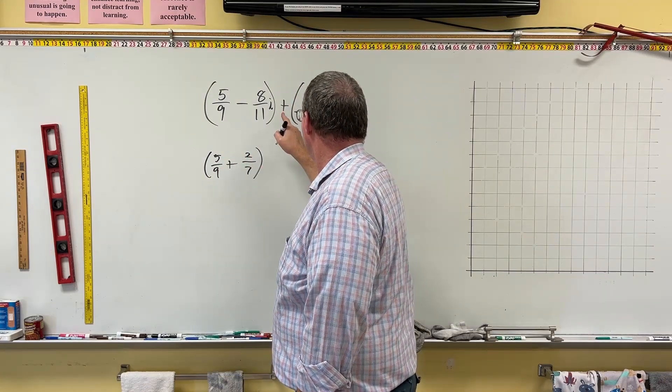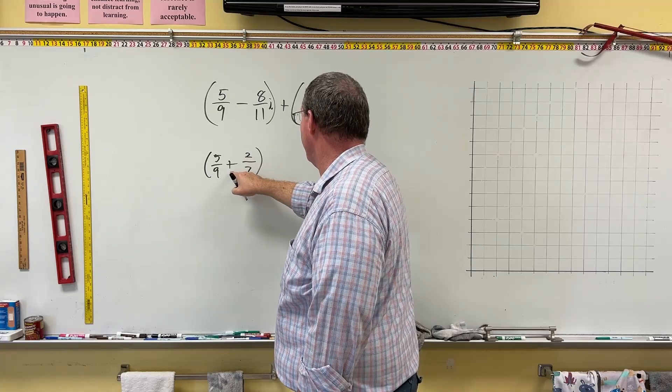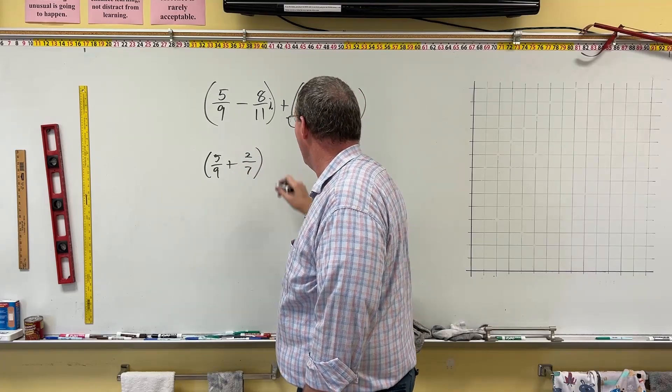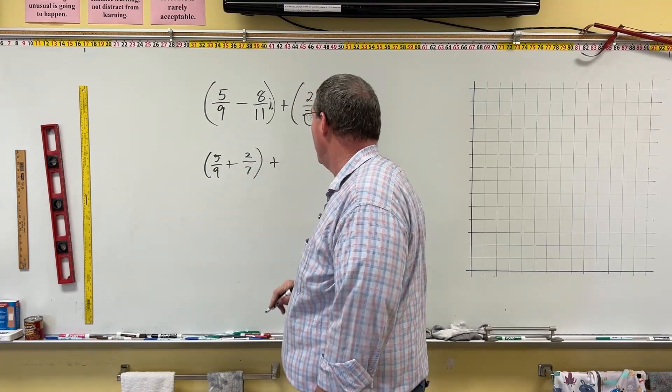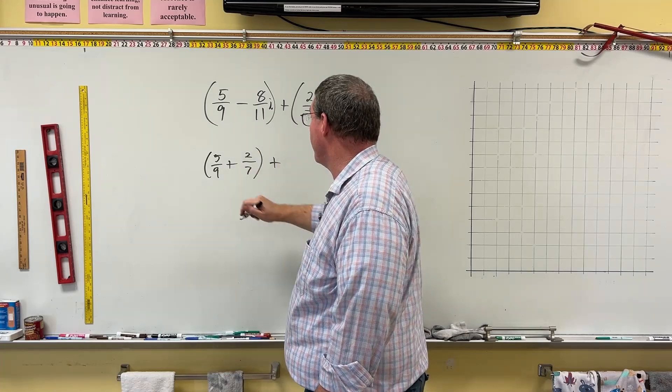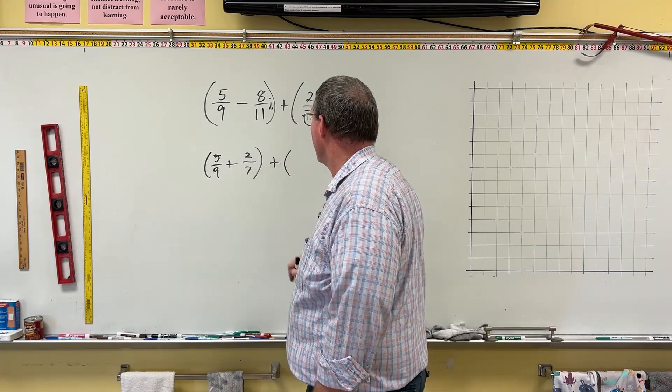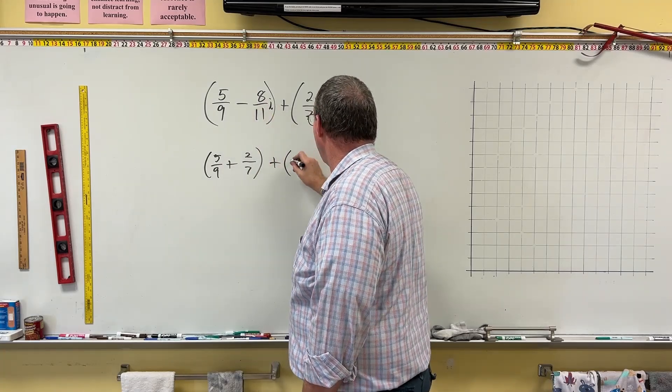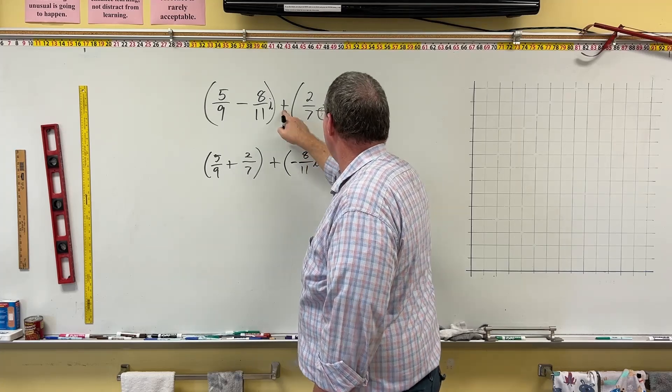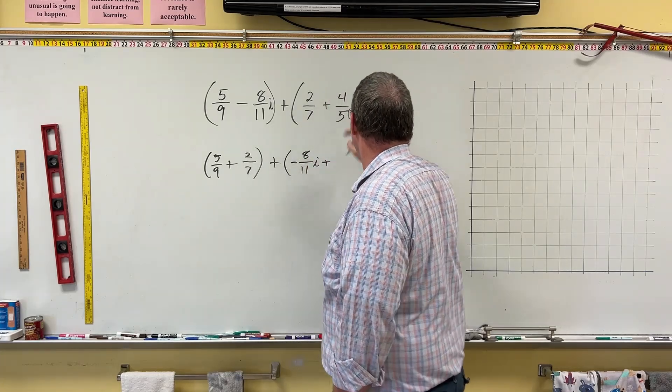plus, well, this plus goes here. Please, please understand that. I don't want to mess that up. We always put a plus in between. We represent this addition inside the parentheses. Plus, negative 8 over 11i, negative 8 over 11i, plus 4 fifths i.